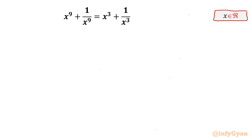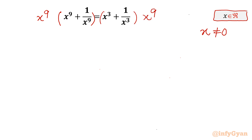Let's get started by writing the domain of the equation first. The denominator cannot be 0, so x cannot be 0. As x is non-zero, I can convert our equation rational-free. Let's multiply both sides with x⁹. The equation will become x¹⁸ + 1 = x¹² + x⁶.